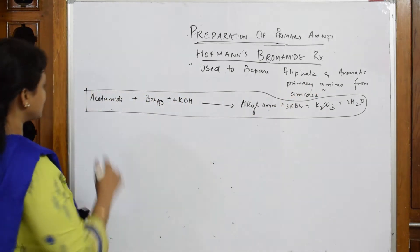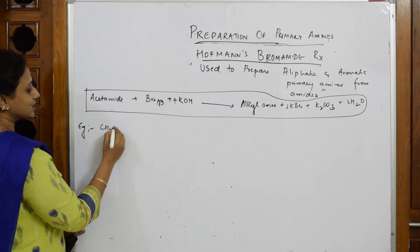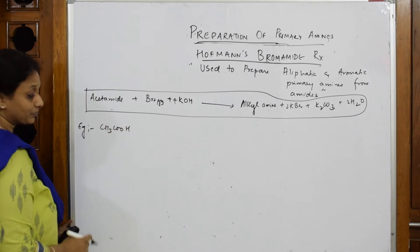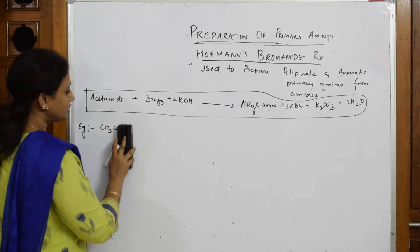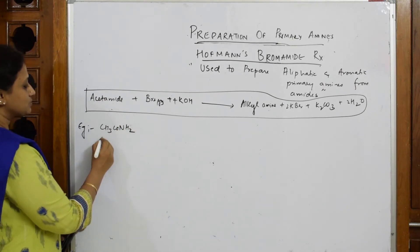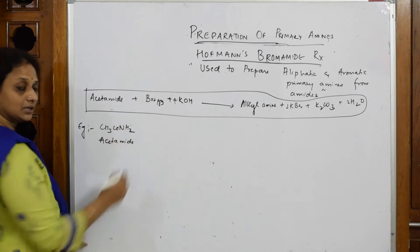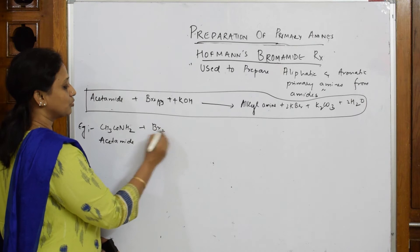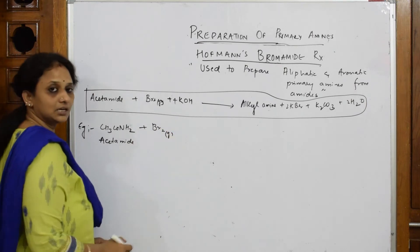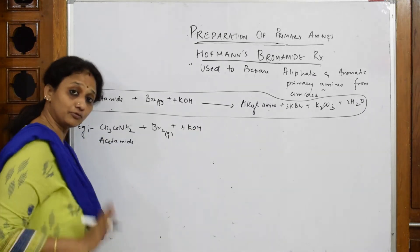Let us take first general example, acetamide. This is your acetic acid. I'm going to take out this OH and add NH2. This becomes acetamide. To this acetamide I'm going to add bromine gas along with a strong base. How many did I take? Four moles.